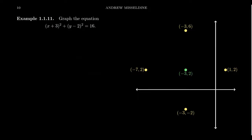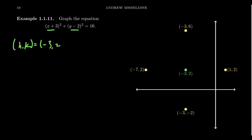For example, if you wanted to graph the circle x plus three squared plus y minus two squared is equal to 16, how would you do that? Let's look at the anatomy of this circle. Because we have x plus three squared and y minus two squared, we can find the center of the circle. The center h comma k is going to equal negative three comma two.